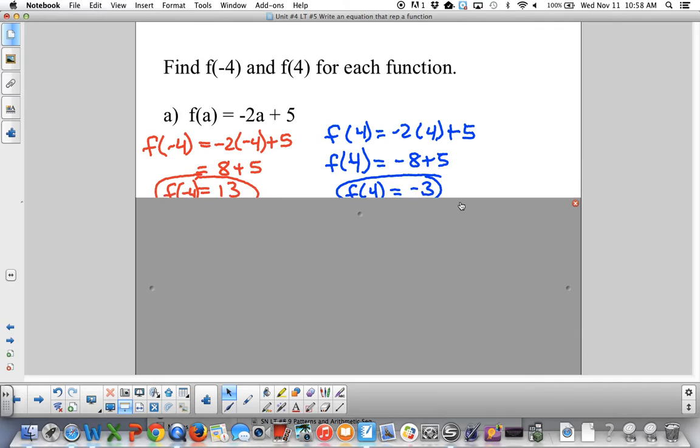So let's see how you did. You simplify each of these and you get f of negative 4 is 13. And over here you get f of 4 is 3.